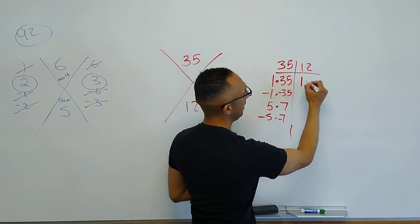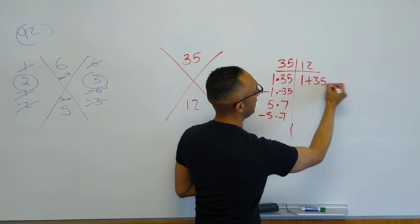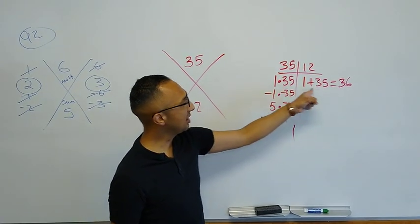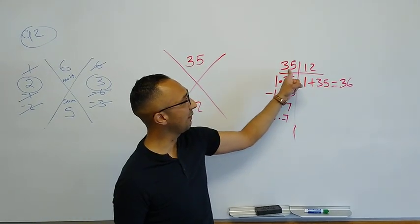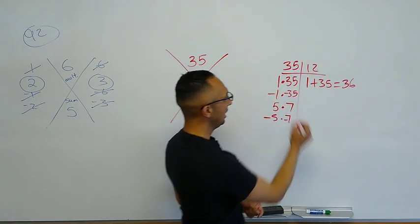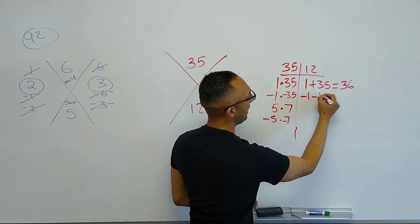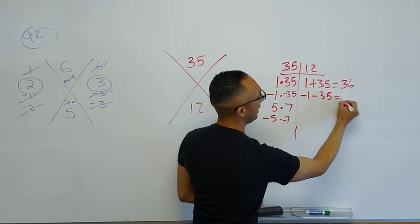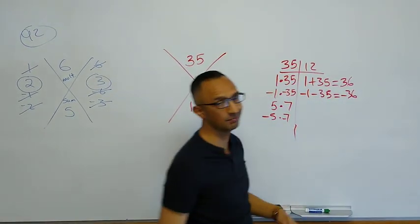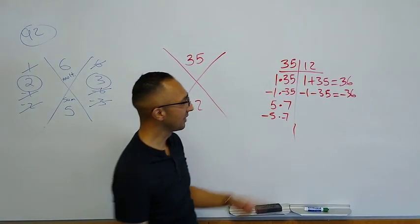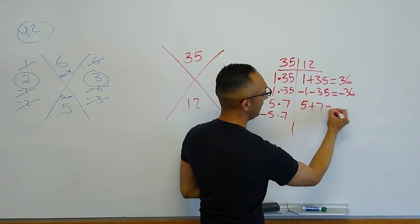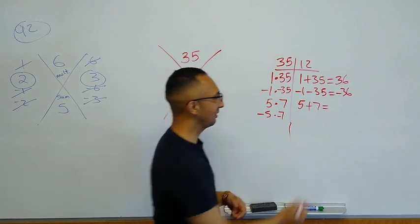So I'm going to go ahead and write 1 plus 35 equals, in this case, 36. As you can see, this combination does give us a 35, but it does not give us the 12 that we're looking for. So that combination doesn't work for us. Going back to this one here now, negative 1 minus 35. In this case, negative 1 minus 35 gives me negative 36. So again, it doesn't work out for us. Moving on to the next one. 5 and 7. We're going to add those. 5 plus 7. 5 plus 7 does give us a 12, which is what we want.